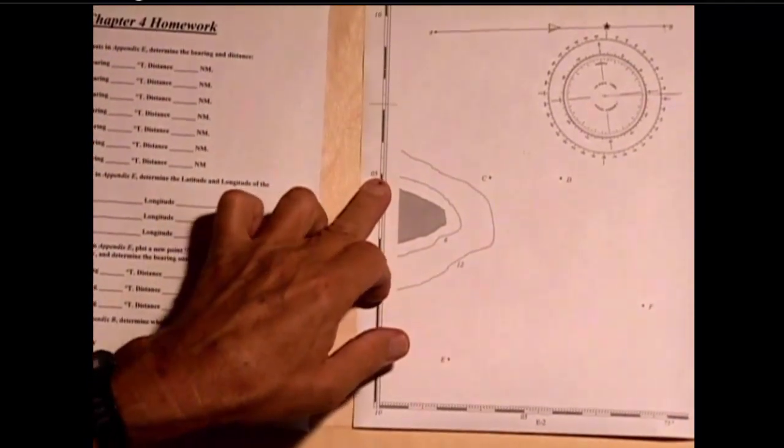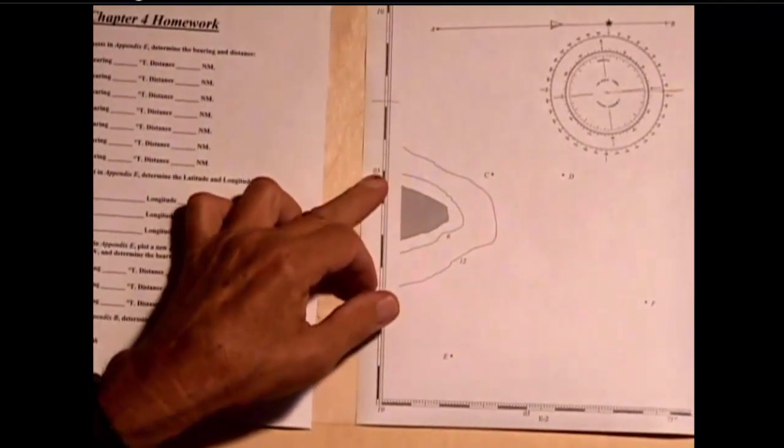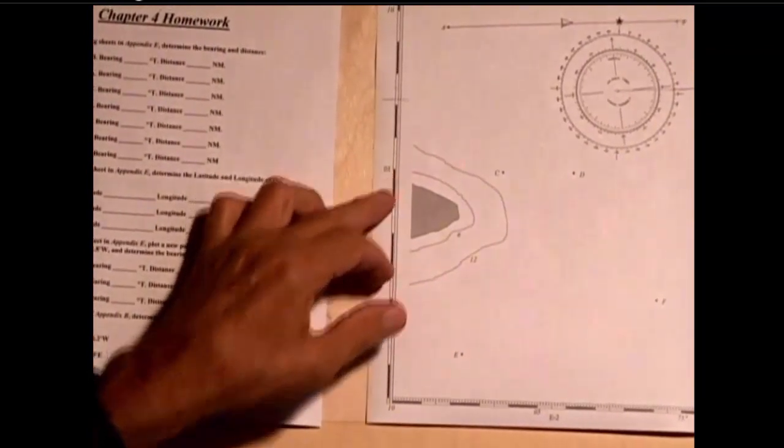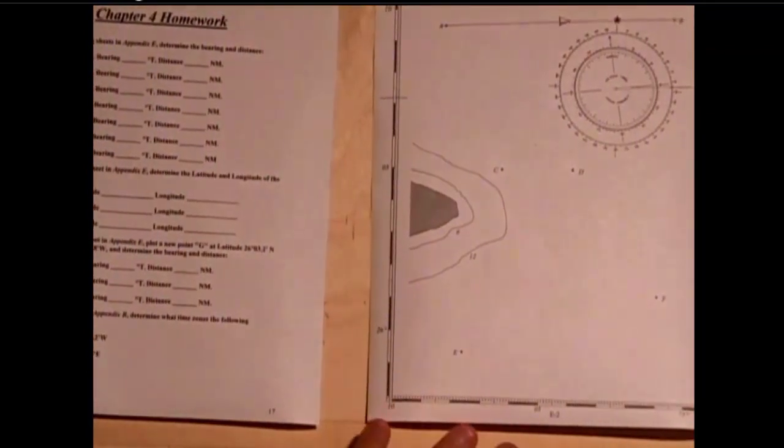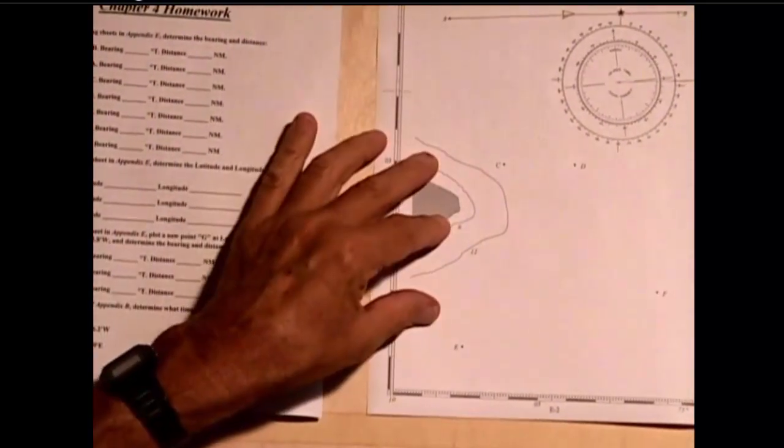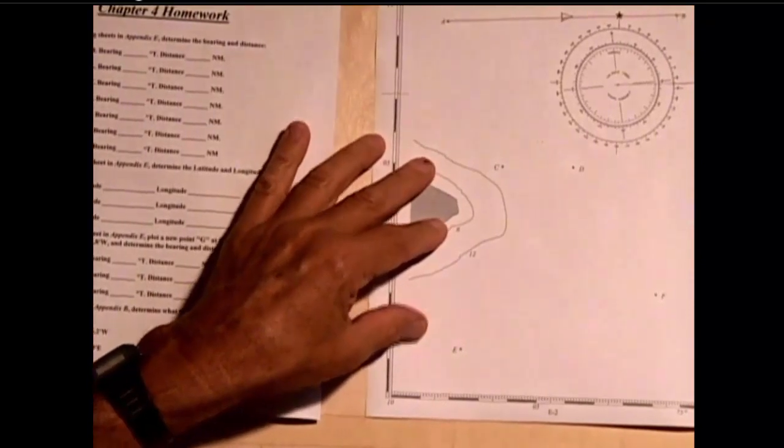Now, remember that a nautical mile is equal to a minute of latitude. It's not equal to a minute of longitude at any time. But you can use the latitude minute scale to measure nautical miles.